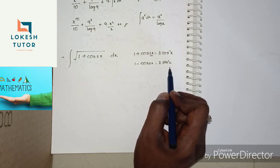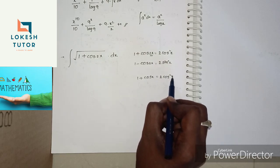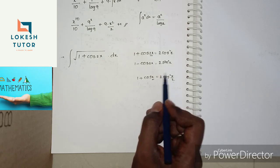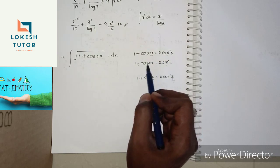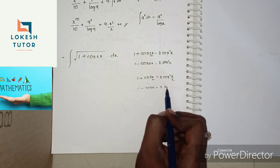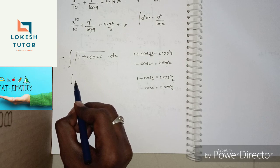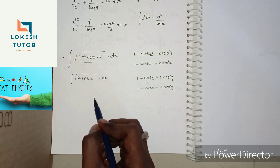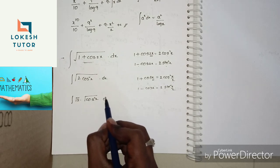A related formula is 1 + cos x = 2cos²(x/2). Remember: plus symbol with cosine gives cosine form, minus symbol gives sine form. So 1 + cos 2x = 2cos²x. Therefore √(1 + cos 2x) = √(2cos²x). We separate this as √2 · √(cos²x), where √2 is a constant.